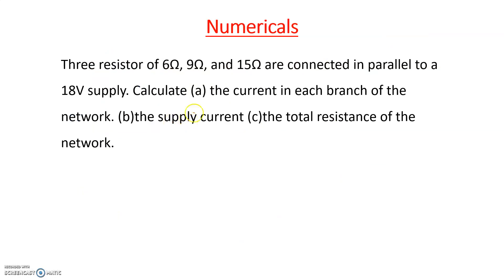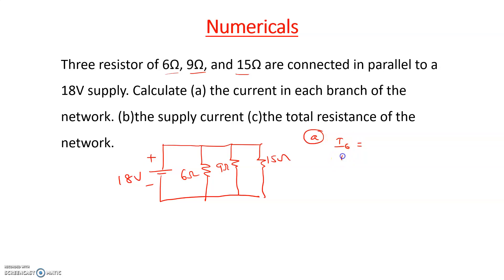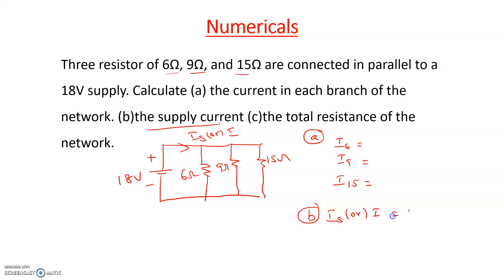Let us see a numerical example for a parallel circuit. Three resistors of 6 ohms, 9 ohms, and 15 ohms are connected in parallel across an 18-volt supply. We need to calculate: the current in each branch, the supply current (total current I), and the equivalent resistance RT.